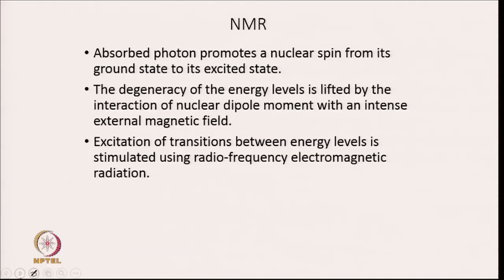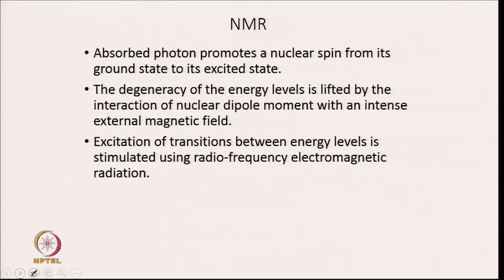In NMR, when a sample is irradiated with light, the absorbed photon promotes a nuclear spin from its ground state to its excited state. A radio frequency pulse is applied which promotes a nuclear spin from its ground state to its excited state. The degeneracy of energy levels is lifted by the interaction of the nuclear dipole moment with an intense external magnetic field. Initially all nuclear levels are degenerate, and their degeneracy is lifted by the interaction of the nuclear dipole moment with an intense external magnetic field.